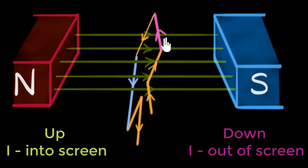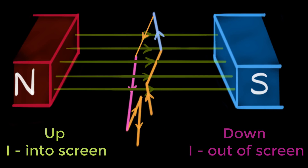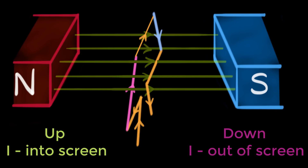But then the pink wire starts moving downwards and the blue wire starts moving upwards. Using our right-hand rule, when the wire is going down the current is out, so the current in the pink wire is now out of the screen. And in the blue wire going up, the current is now inwards. In other words, the current reverses its direction. This is important — the current reverses every time the coil reaches the position perpendicular to the magnetic field.